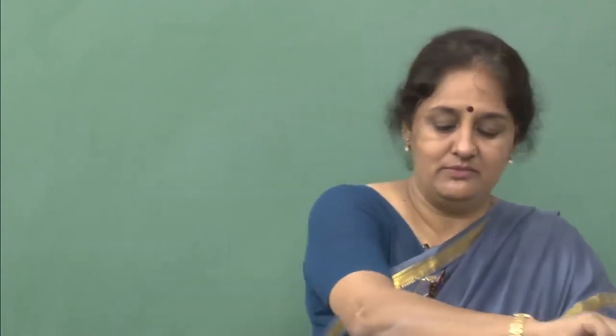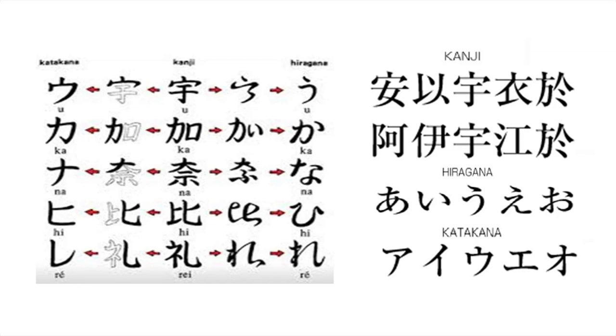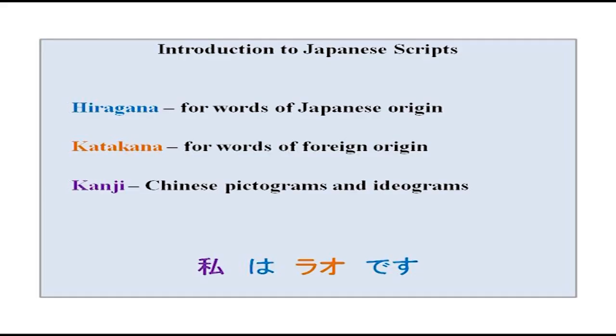With trade, with people coming in, and with Japanese people going out to Korea or China, foreign words also entered Japan. Foreign words slowly came and were being used in the language. There was a problem as to how to write those foreign words, so from these pictograms and ideograms already there, katakana was developed for foreign words.